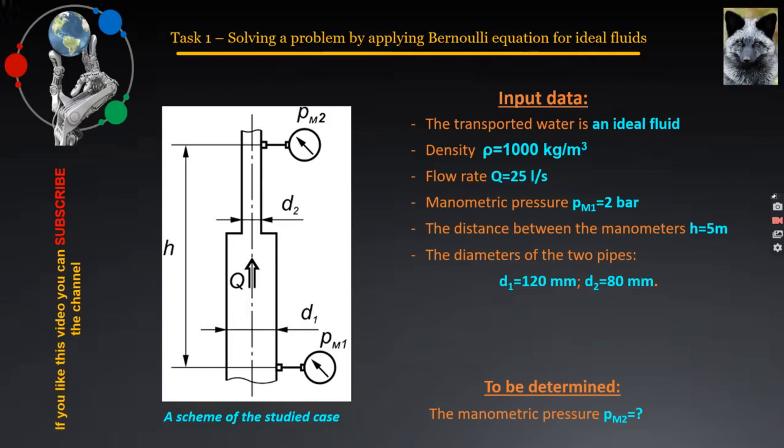On the next slide, the aim of the problem on left and the output data on right that will be used in its solution are presented. Briefly, a simple pipe system located in the vertical direction consisting of two series connected pipes of different diameters has to be studied. Manometers are installed in certain points in both pipes, with the help of which the respective manometric pressures are measured. The distance at which they are installed from each other is presented by the height h.